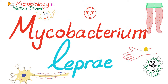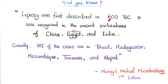There are two types of leprosy: tuberculoid leprosy and lepromatous leprosy. Leprosy was first described in 600 BC and was recognized in the ancient civilizations of China, Egypt, and India. Currently, 90% of cases of leprosy are in Brazil, Madagascar, Mozambique, Tanzania, and Nepal. Over the last 100 years, the incidence of leprosy has declined a lot, which is great.